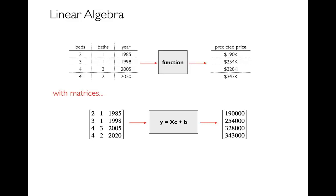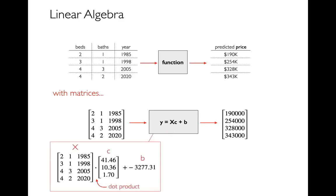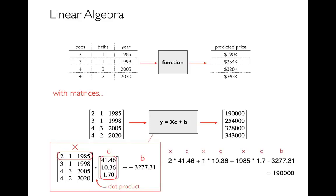I'm not assuming any math background beyond high school. For a regression on house data, I might put all the numbers into a matrix X, and the function becomes an algebraic expression using matrices: X dot C plus B equals a vector of predicted prices. X is a matrix, C is a vector, B is a scalar. The dot product lets me compute all predictions in one step without a loop — doing one row times a vector gives one house value, and doing the full matrix gives all values at once.